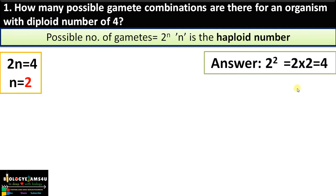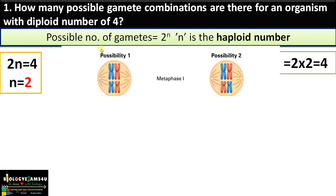That is 2 into 2 — 4 possible gamete combinations. To understand the concept better, suppose this is a cell with the diploid chromosome number 4. There are two homologous pairs: chromosome number 1 homologous pair and chromosome number 2 homologous pair. There are two possible combinations for these chromosomes to align during metaphase 1.